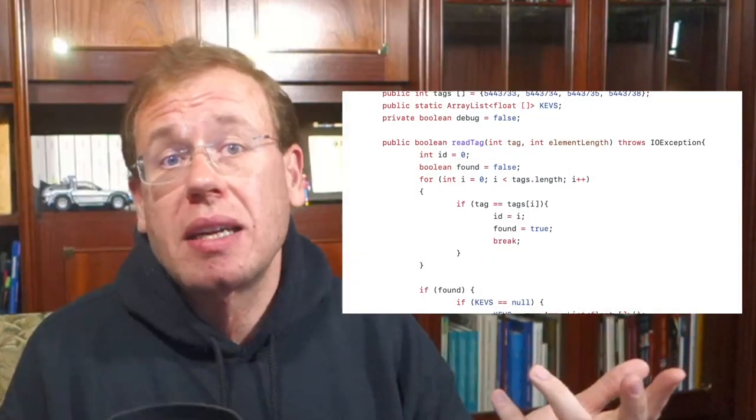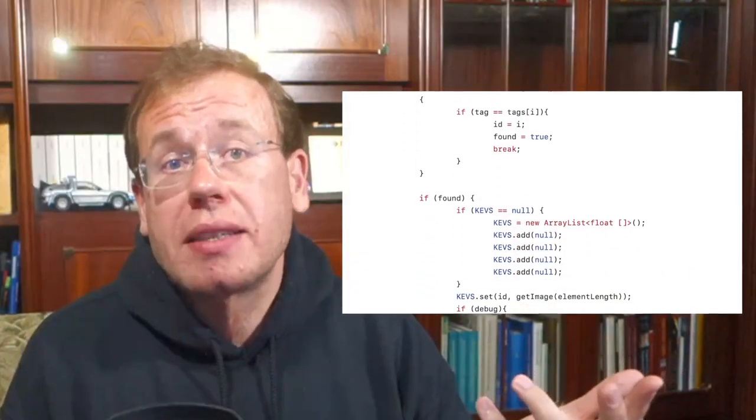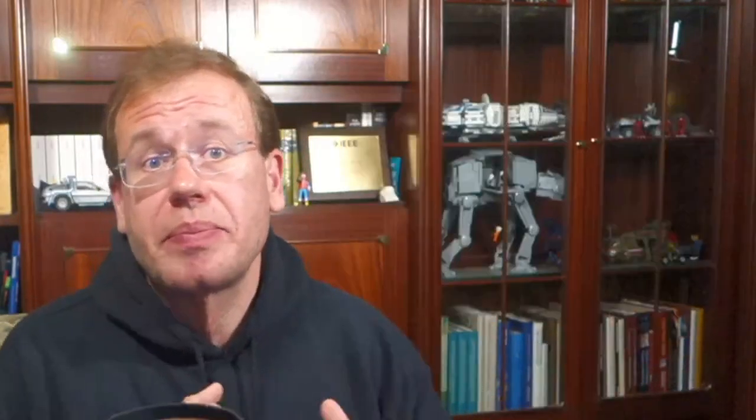In the next step we adjusted the DICOM reader in Conrad to correctly extract the image data from the custom DICOM header. This can be done in a few lines of code, which you can see here. Next, we used Conrad's machine learning features — it uses ImageJ and WEKA to train simple classical machine learning models. We also published the models and you'll find the link in the paper.